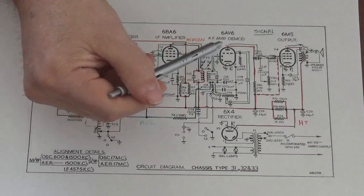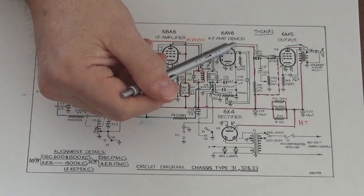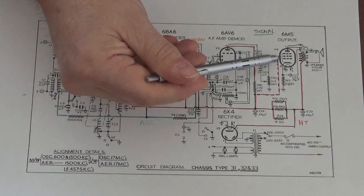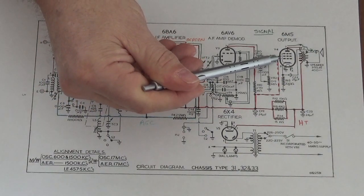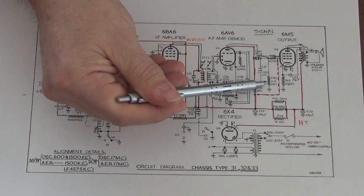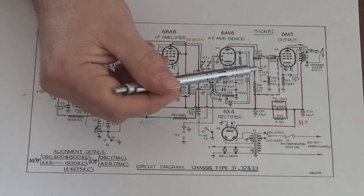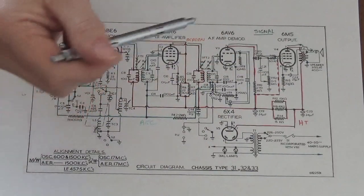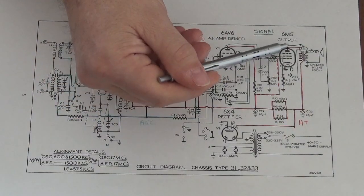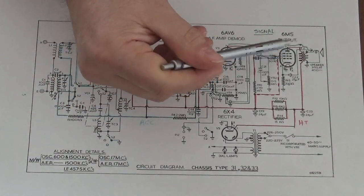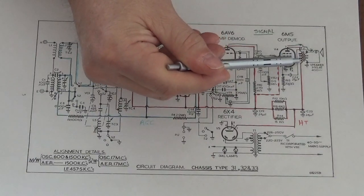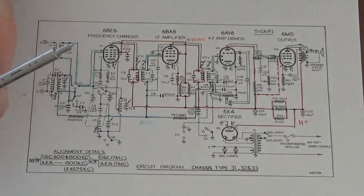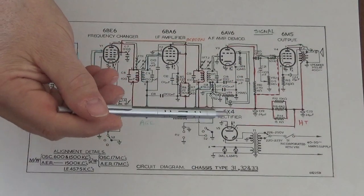There's an amplification stage here and the amplified signal appearing on the anode is capacitively coupled through to the control grid on our output stage. This control here is the tone control, which varies the frequency response of the signal as it's coupled through. The signal at the anode is greatly amplified and passes through our audio output transformer and onto the voice coil of the speaker.